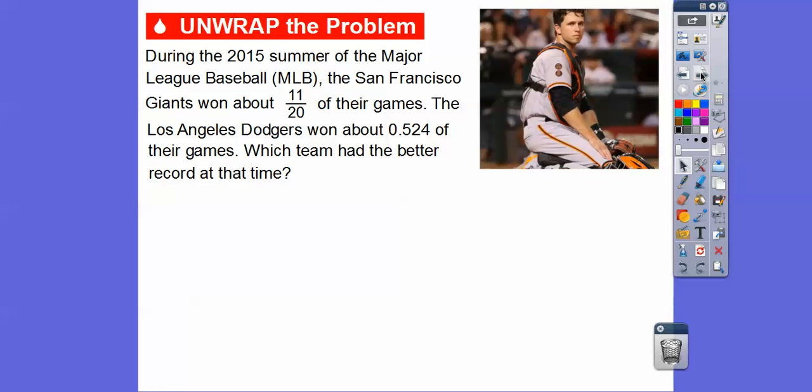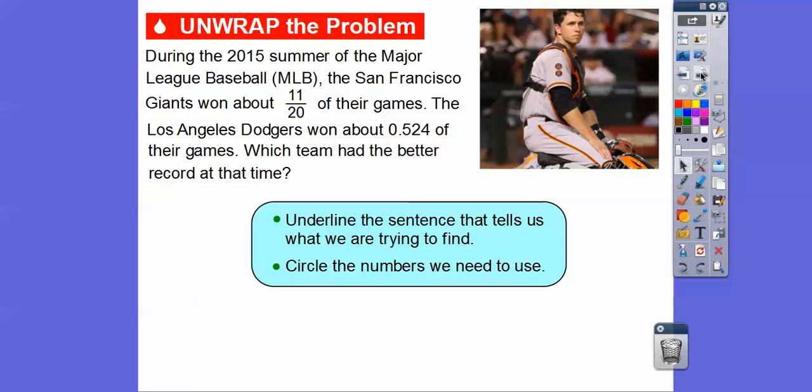During the 2015 summer of Major League Baseball, the San Francisco Giants won about 11 out of 20 of their games, and the Los Angeles Dodgers won about 0.524 of their games. So which team had the better record at the time?